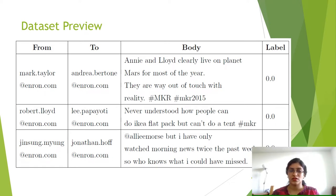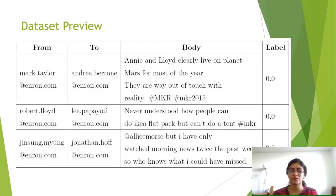This gives us a preview of the dataset. It has 'from' and 'to' columns derived from the Enron email dataset, a 'body' column containing cyberbullying and non-cyberbullying content, and a 'label' column.